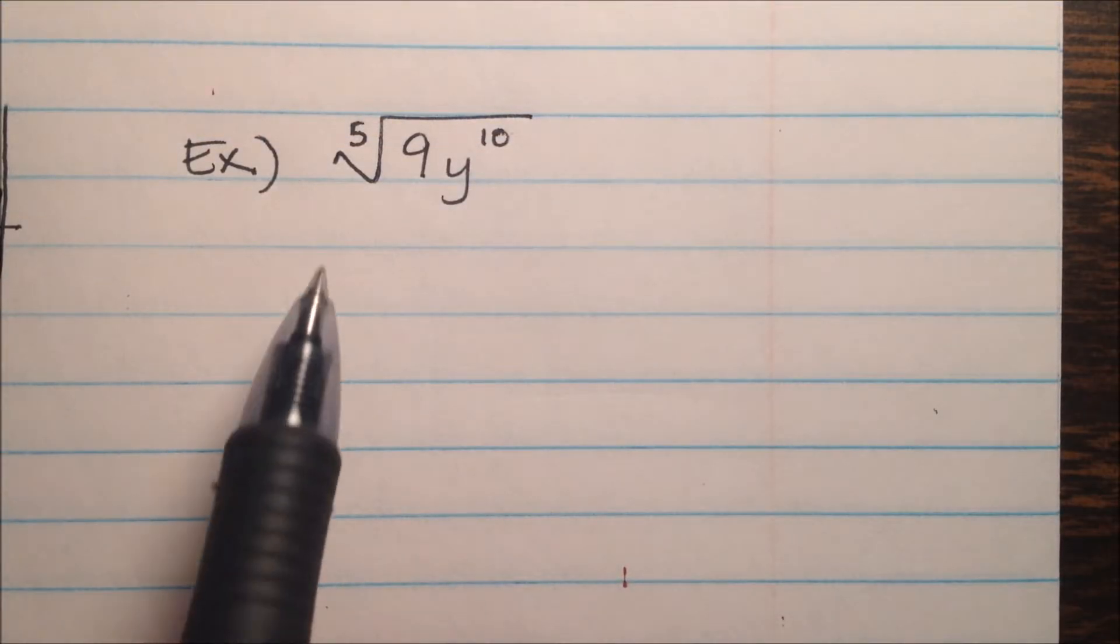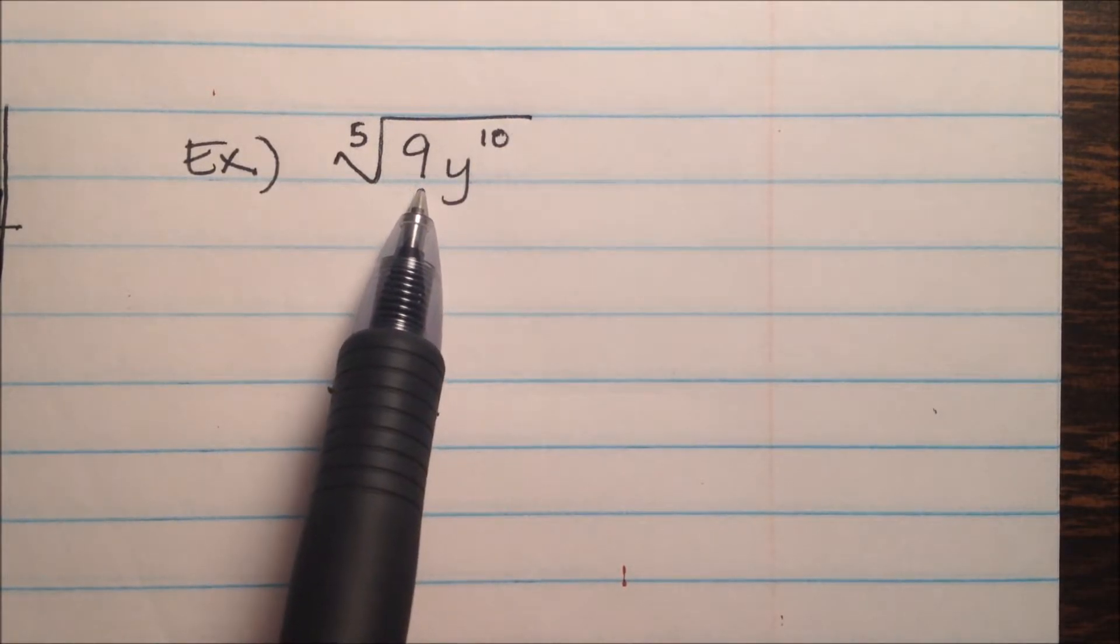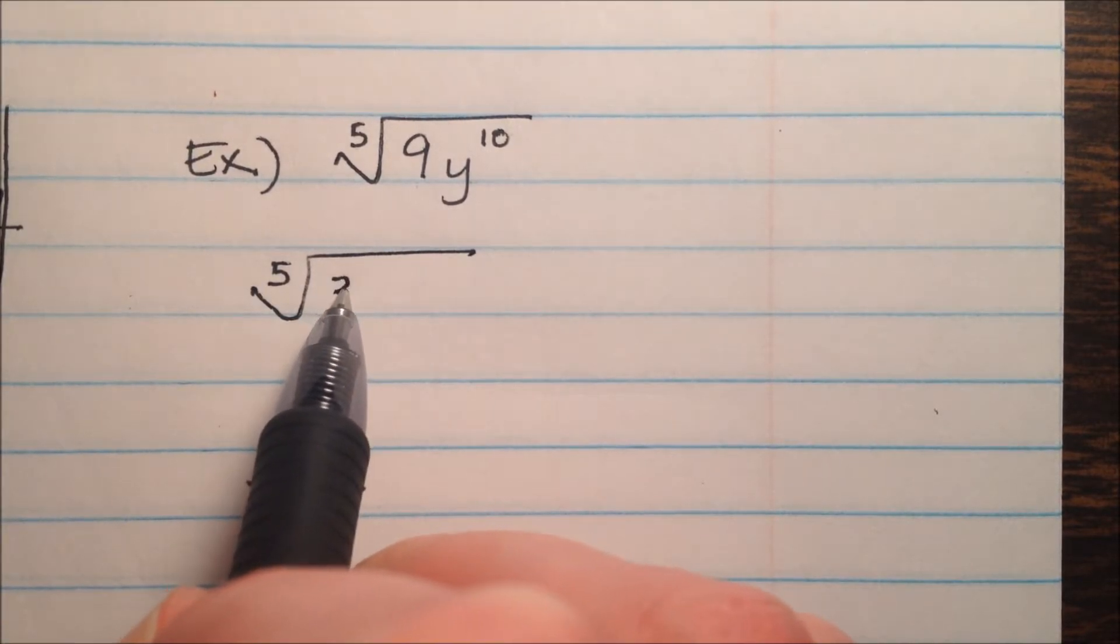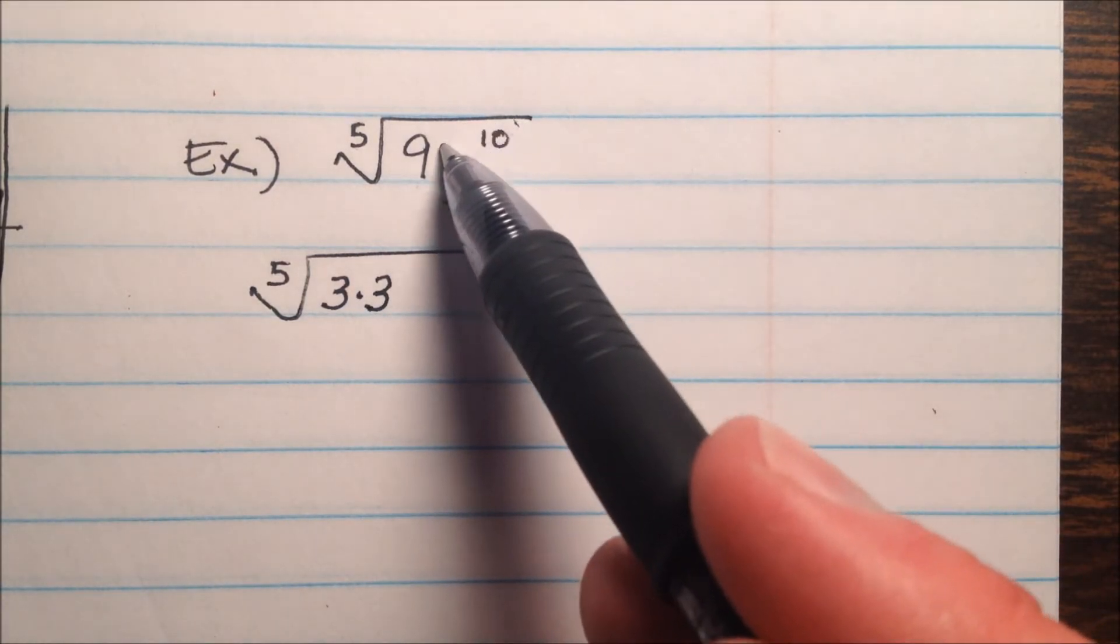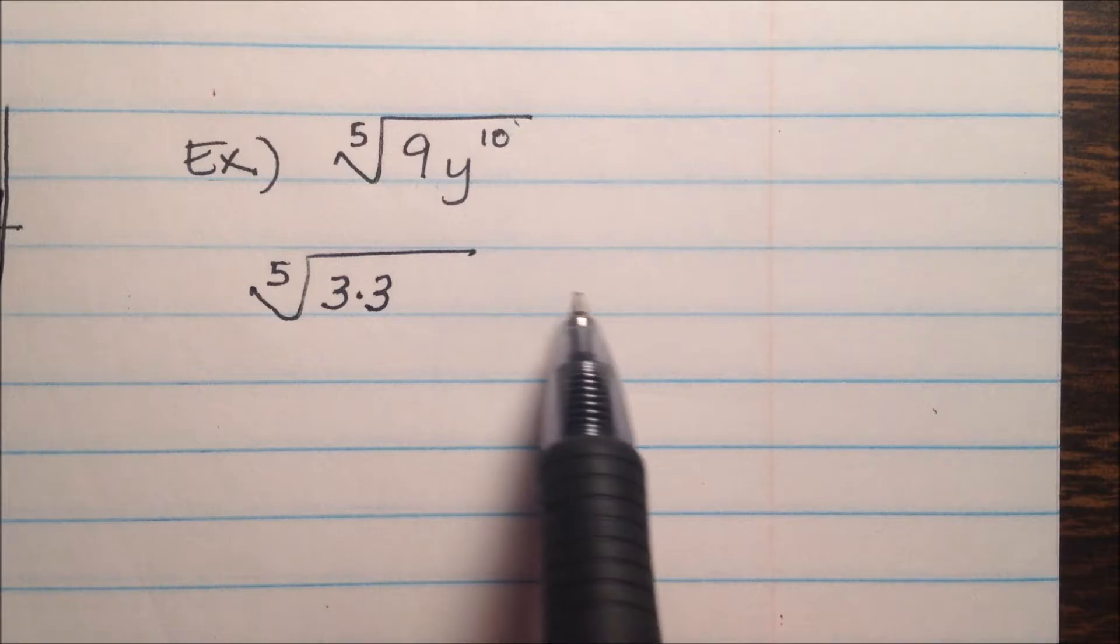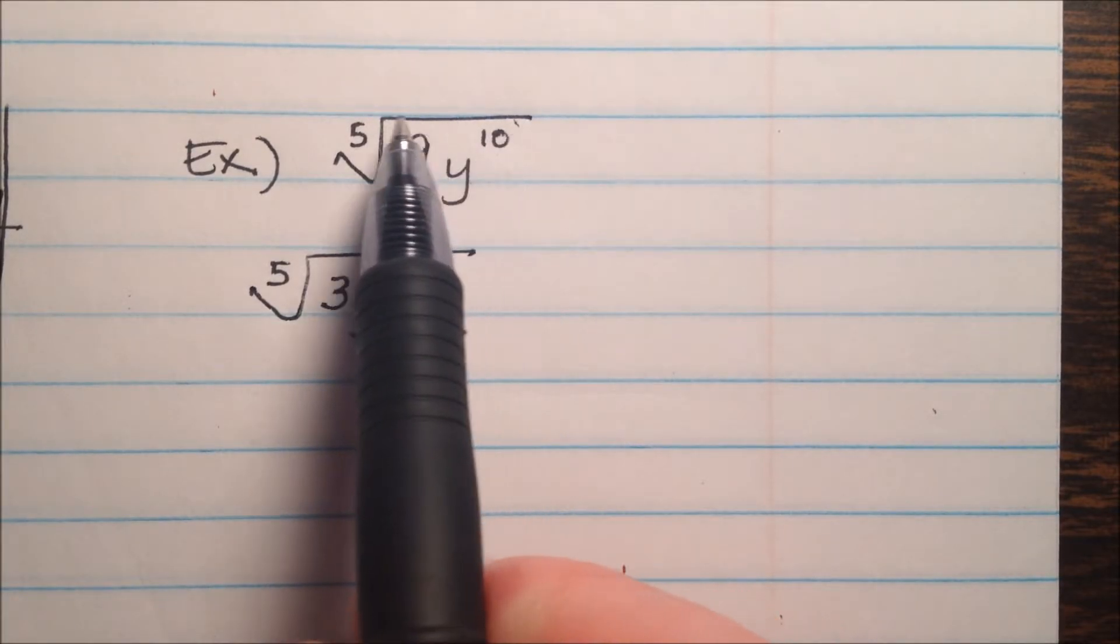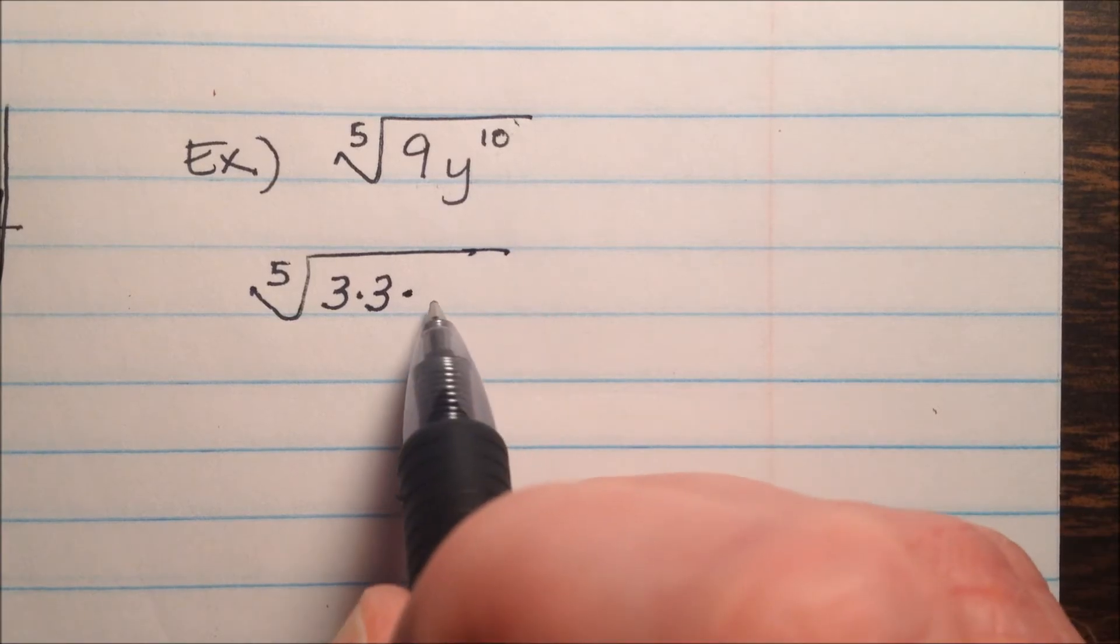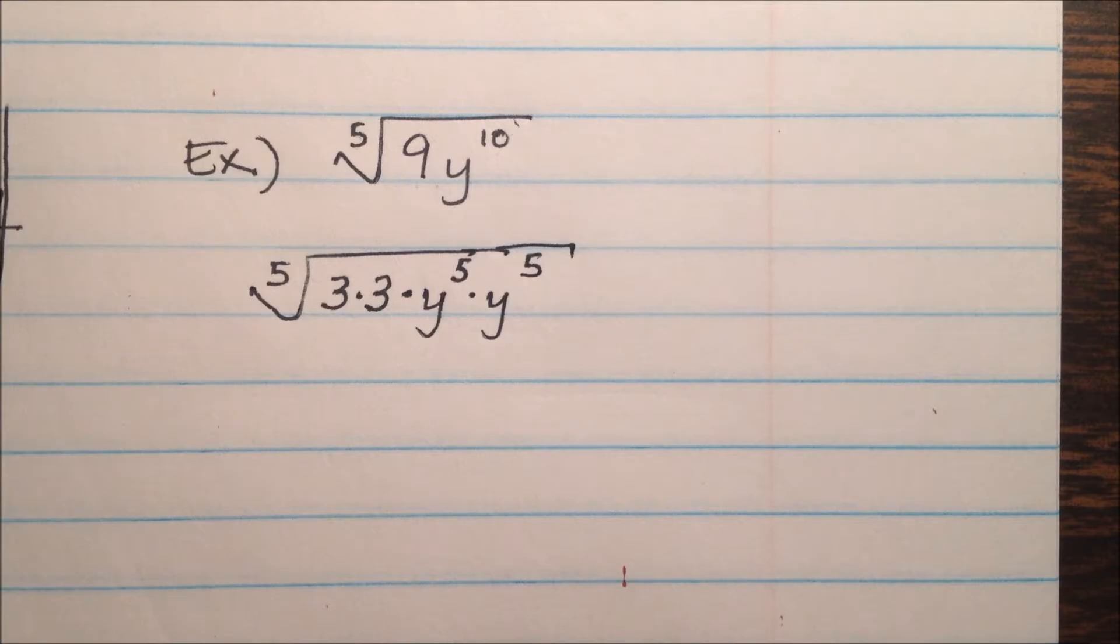Our next example is the 5th root of 9y to the power of 10. Well, 9 we know is just going to be 3 times 3, so it's the 5th root of 3 times 3. And I'm going to start to change this a little bit. I don't want to write out 10 y's and then make 2 groups of them, because if I'm taking groups of 5, I already know there's going to be 2 groups of 5 in 10, because 10 divided by 5 makes 2. So for the sake of showing it to you, I'll show you 1 group of 5 y's and then another group of 5 y's.